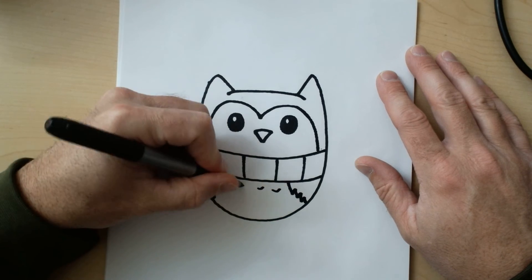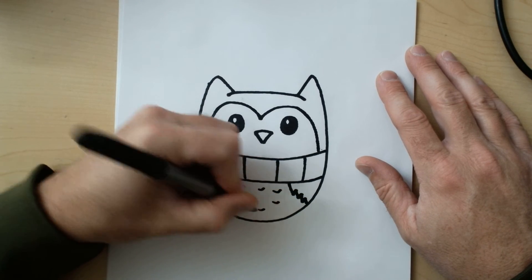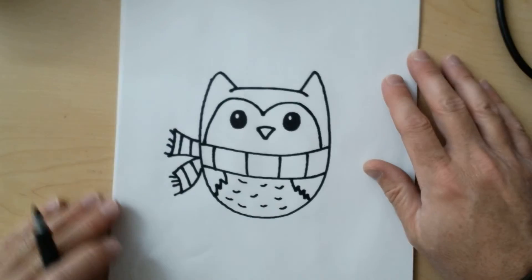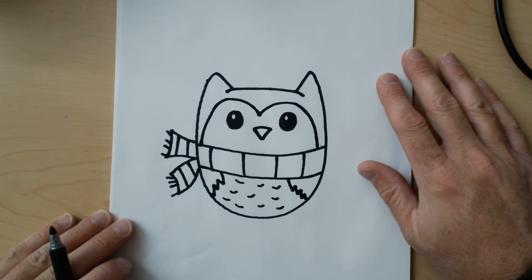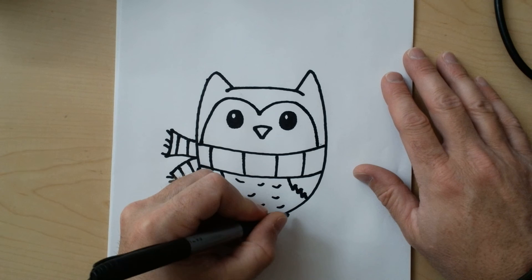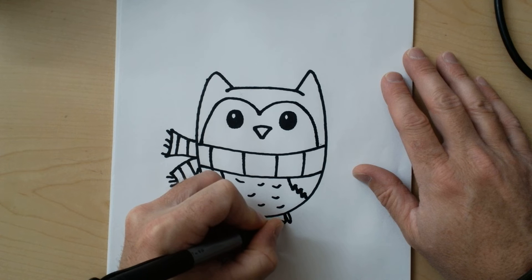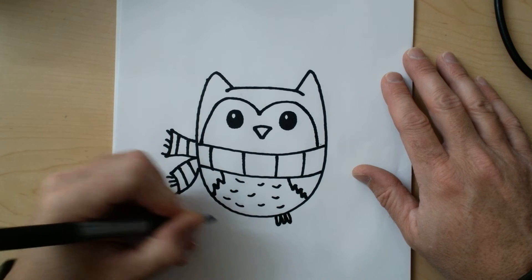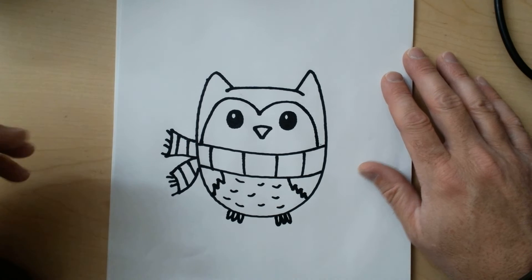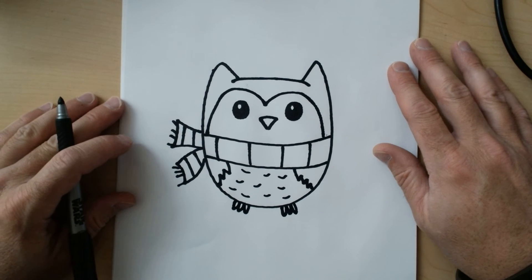And I'm gonna make a few little lines, little bumps for texture on his body. Now for his feet, we're just gonna make three little bumps on this side, three little bumps on this side, like that.